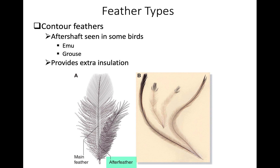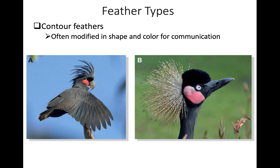Some birds have an after shaft — a secondary shaft off the calamus that produces a semi-plume-like feather attached to the contour feather, providing extra insulation or in some species a display function. It's found in emus and grouse. Finally, contour feathers can be modified with brilliant colors for species recognition and mate choice — which is why males tend to be brighter in most bird species — and the shape itself can vary, as in the crests of the crowned crane and palm cockatoo.